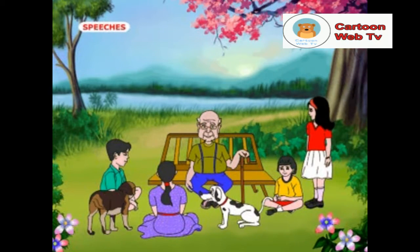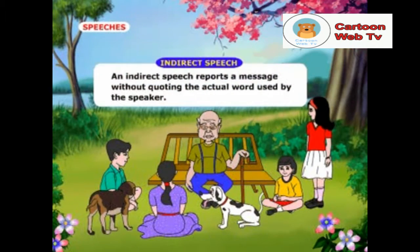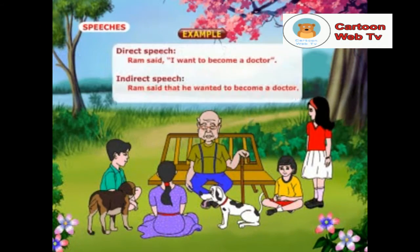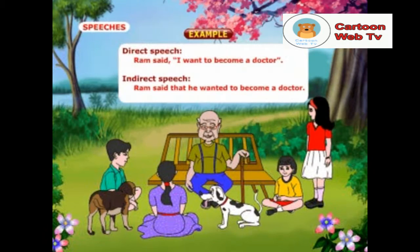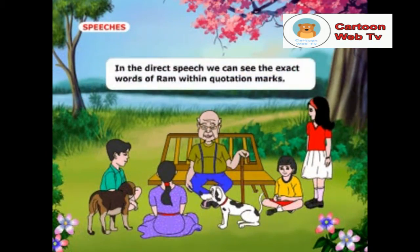Grandpa, what are direct and indirect speeches? A direct speech is the way of quoting the exact words of the speaker. An indirect speech reports a message without quoting the actual words used by the speaker. Here are the examples for direct and indirect speeches. Direct speech — Ram said, "I want to become a doctor." In the direct speech, we can see the exact words of Ram within quotation marks.